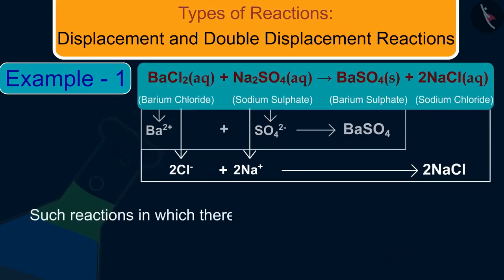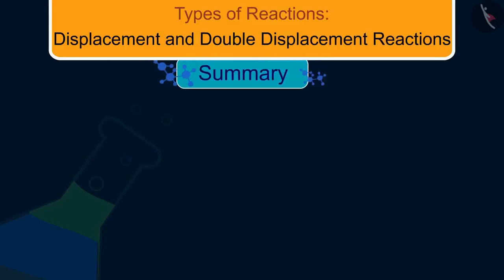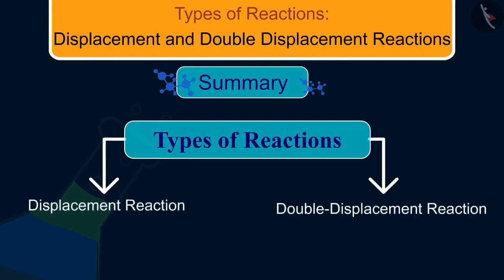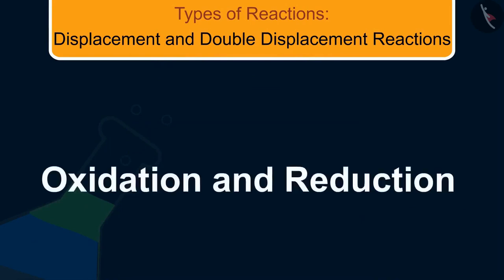Such reactions in which there is an exchange of ions between the reactants are called double displacement reactions. Friends, in this video we studied displacement and double displacement reactions. In the next video, we will learn about oxidation and reduction reactions.